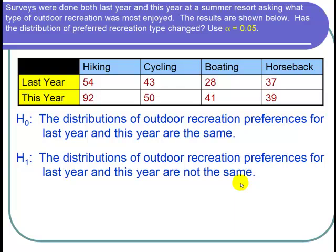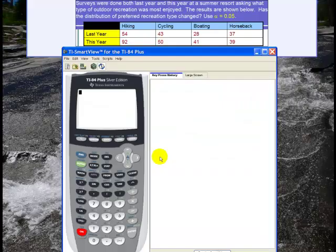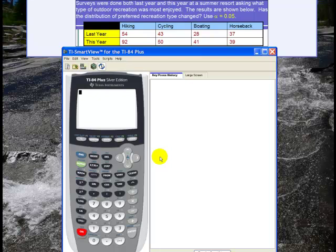So now let's go to the calculator to crunch our data and find the p-value for this hypothesis test. So here's the calculator and when performing a test for homogeneity it's very similar to a test for independence.